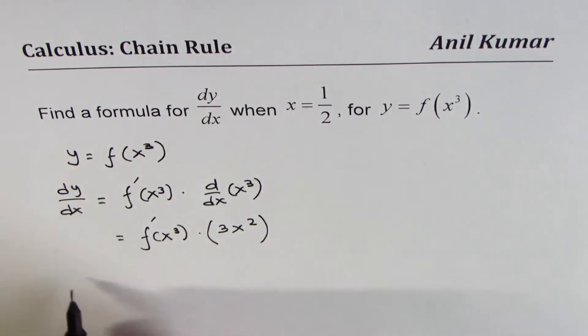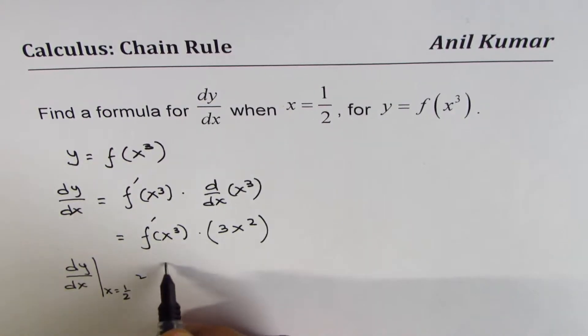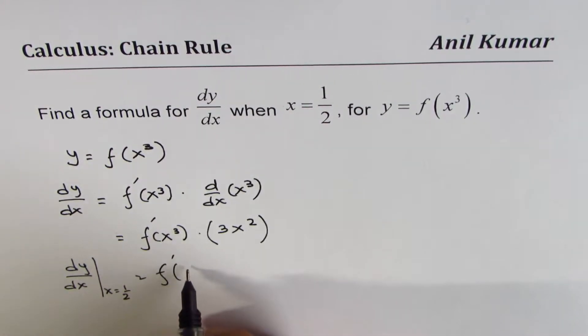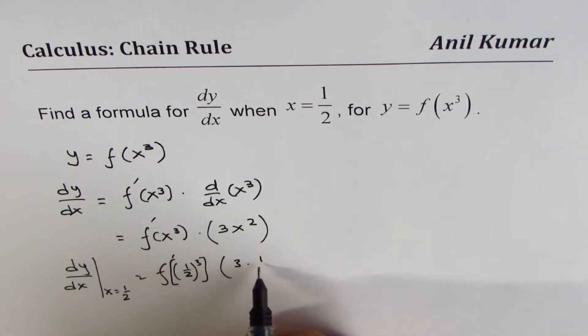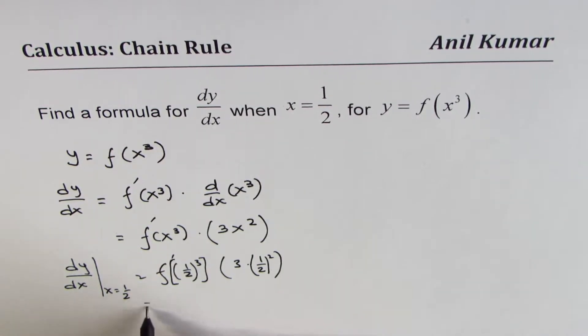So at x equals 1/2, we can say dy/dx at x equals 1/2, we'll replace x with 1/2 here. We get the derivative at (1/2)³ times 3 times (1/2)². That should give us the derivative of this function at 1/8, times 3/4.